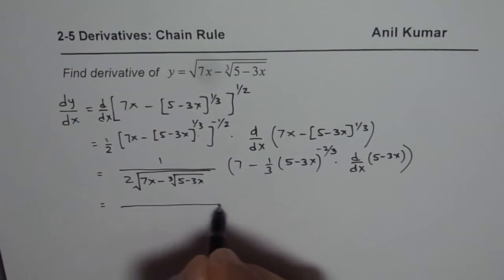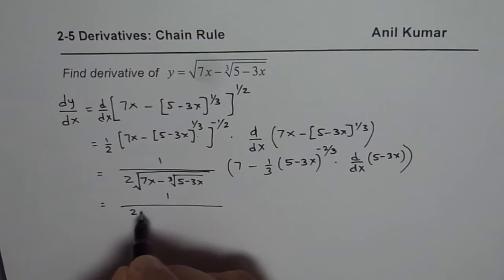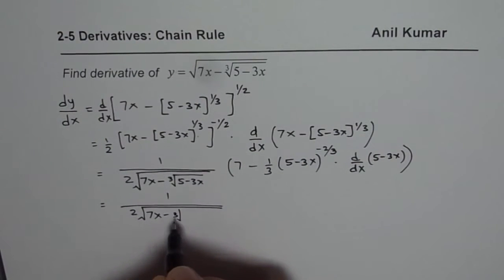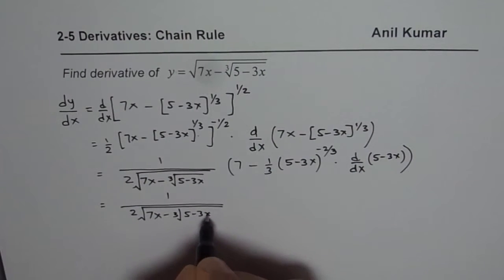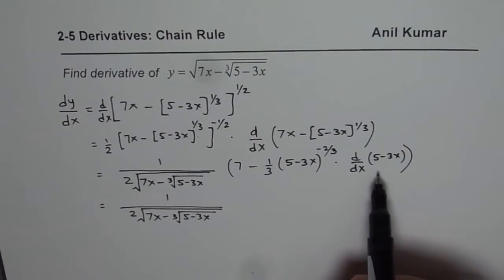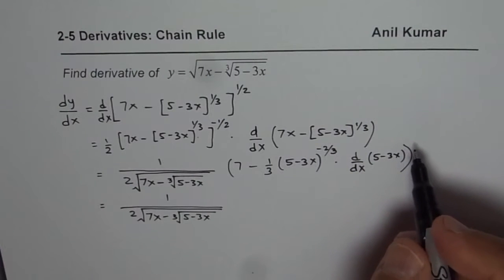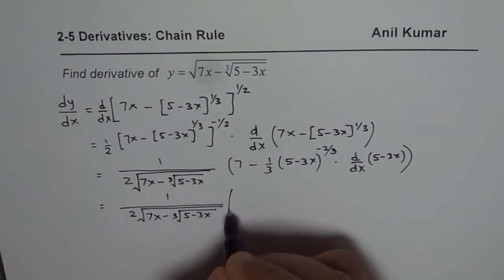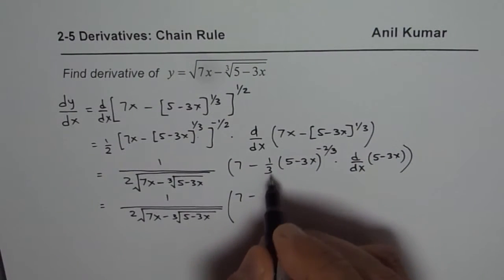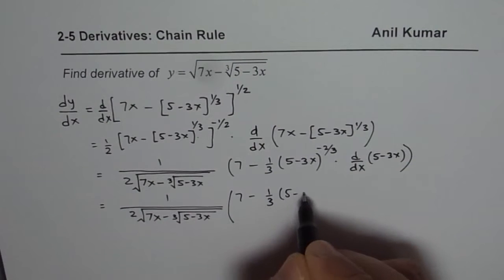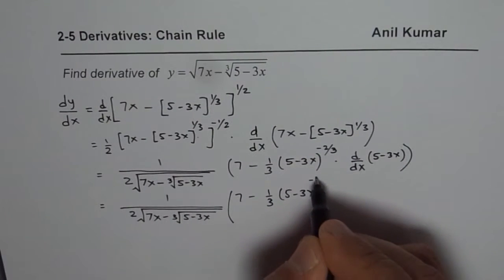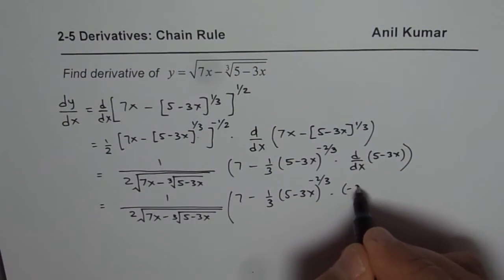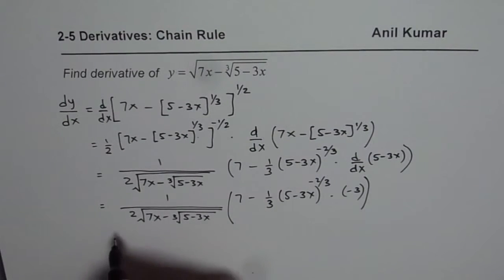So let's combine these terms. We have 1 over 2 square root of [7x minus cube root of (5 minus 3x)]. Now here, what we have is 7 minus 1/3 times (5 minus 3x)^(-2/3) times derivative of this, which is minus 3. So that is what we get. Now we can combine them.